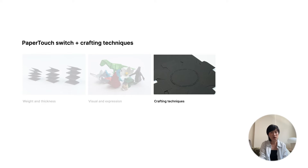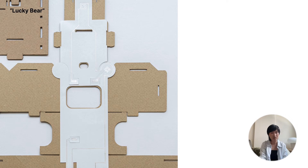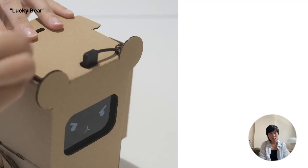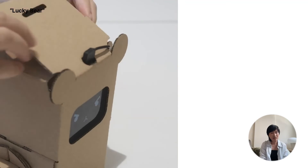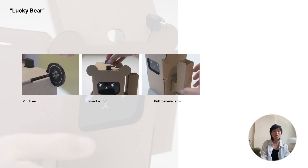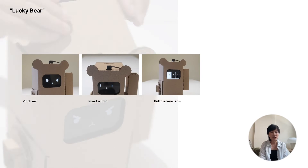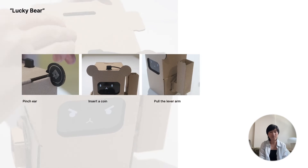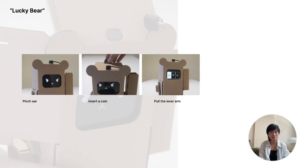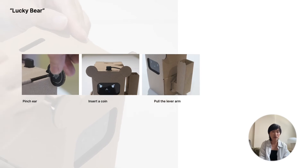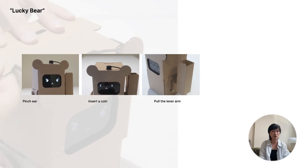We explored different crafting and making techniques with paper, turning it into parts of an interface, then using slots and drawings to put multiple components together. For example, we used cardboard to create a playful coin bank called Lucky Bear. We place a phone inside a cardboard case, using its screen to show animations. We can interact with Lucky Bear in a few ways: pinch its ear to see its cute face, drop a coin to trigger a paper flap inside and activate the slot machine, or pull the arm to start the slots spinning.